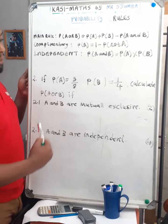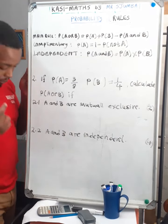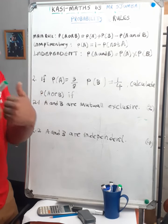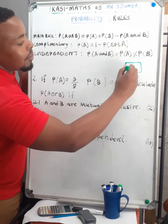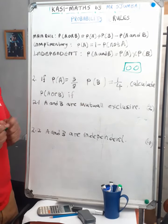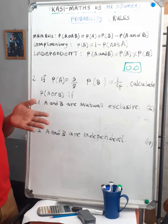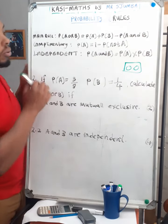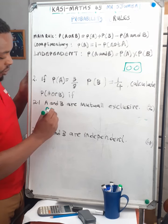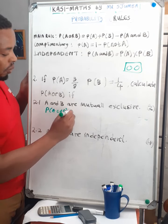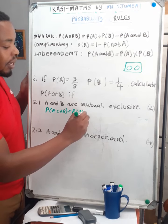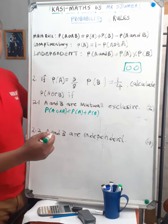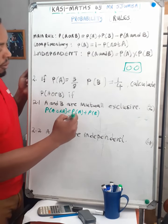For 2.2, A and B are independent events. If A and B are mutually exclusive, that means they are disjoint — there is no intersection. So probability of A or B equals probability of A plus probability of B minus 0, because mutually exclusive means the intersection is 0.